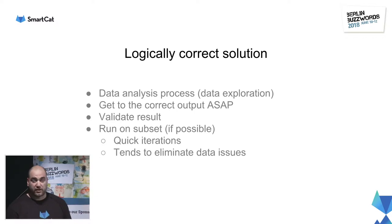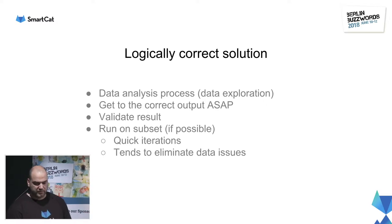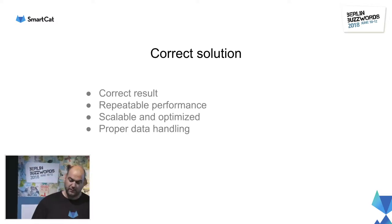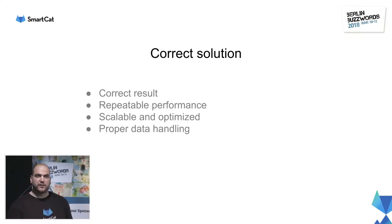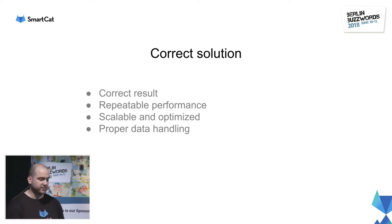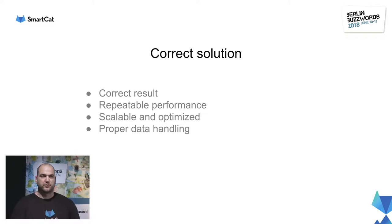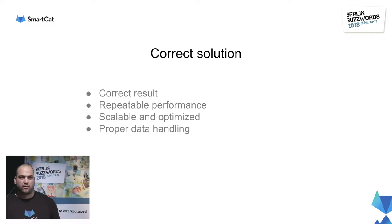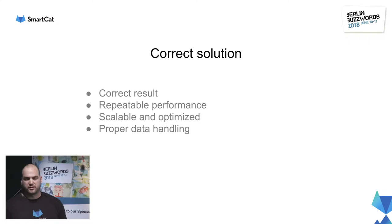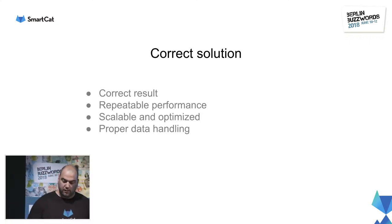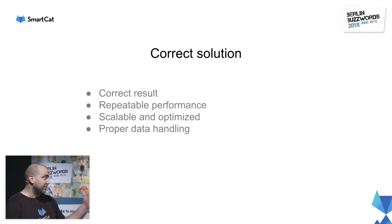The problem with running on a subset of data was that once I started running on the full data set, all possible problems came up. The second part of the process was getting to a correct solution with the same correct result but with repeatable performance. Repeatable performance was something we were targeting from the start because this process needed to be rerun almost daily — scalable, optimized, and with proper data handling. This is where the pain began.